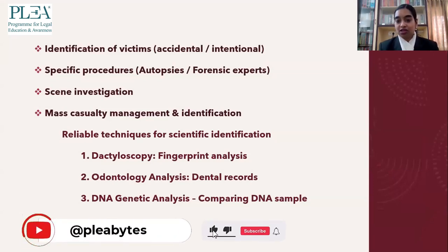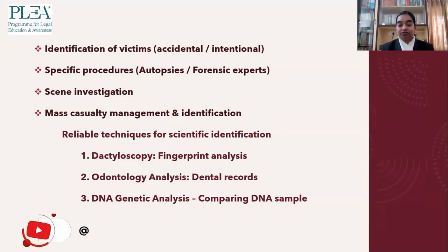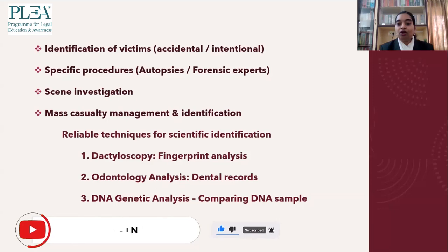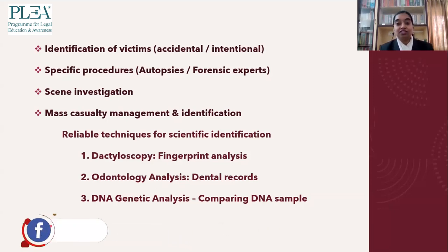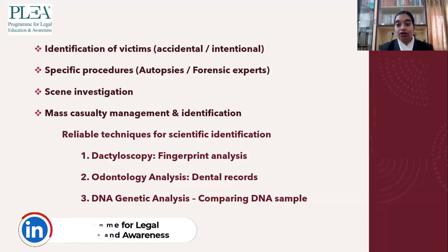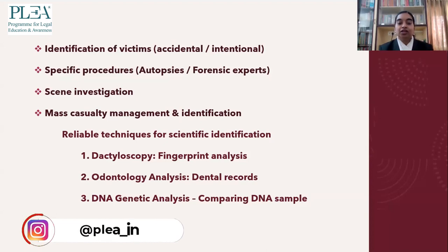First, identification of victims. This is a little into investigation, but it includes whatever points relate to the medical-legal aspect of such disasters. Identification of victims is important because it helps understand whether this was really an accident or was it intentional — somebody might have done some mischief and the factory broke out into fire. This helps in understanding what compensation has to be given, and whether it was accidental or not, because after all, it's a crime when it comes to law.